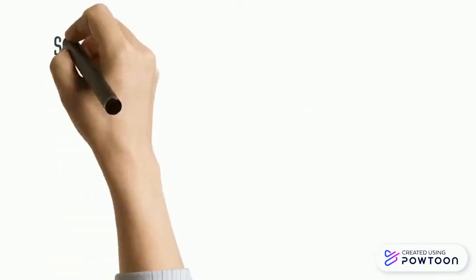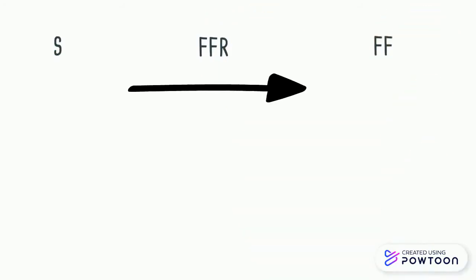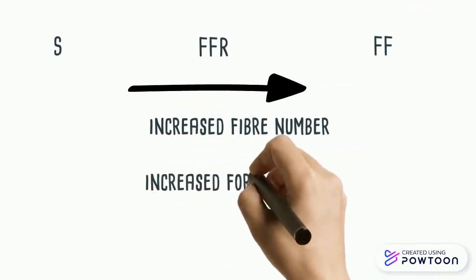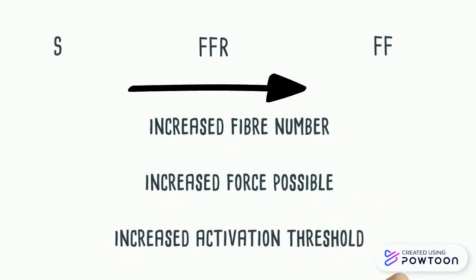Now, if we arrange the three types of motor units on a sort of sliding scale, we can see that as we move from slow to fast fatigue-resistant, and finally fast fatigable motor units, there is an increased force possible due to an increased number of fibers and also an increased activation threshold.